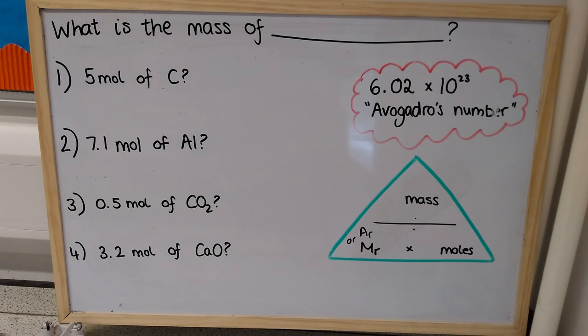Now the actual number a mole is approximately 6.02 times 10 to the 23, and what that number represents is the number of atoms that you find in the relative atomic mass of an element in grams.